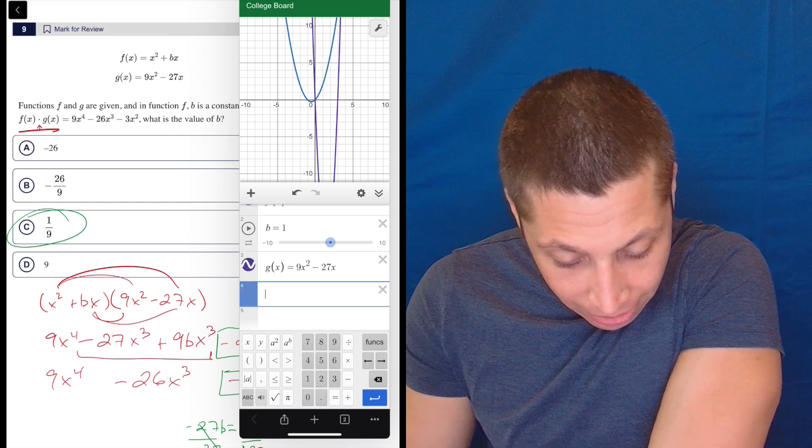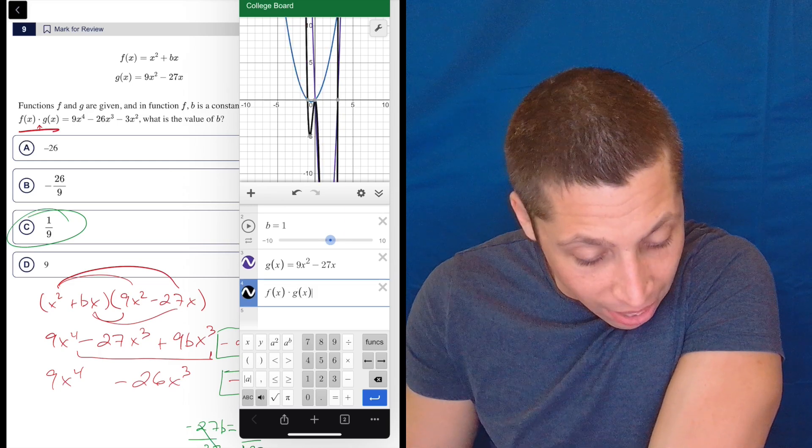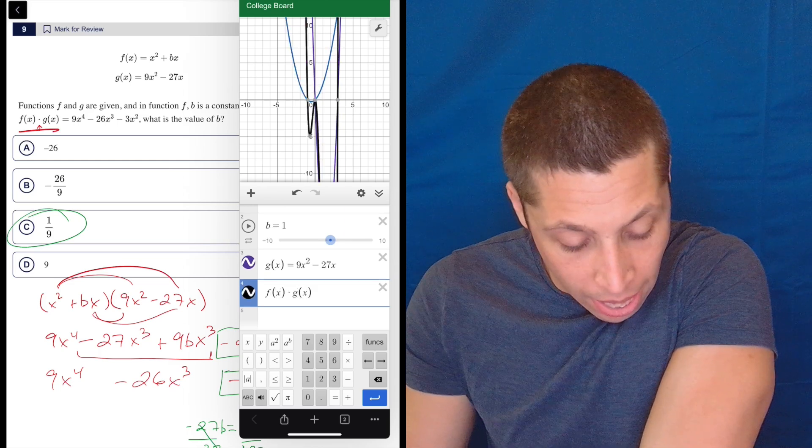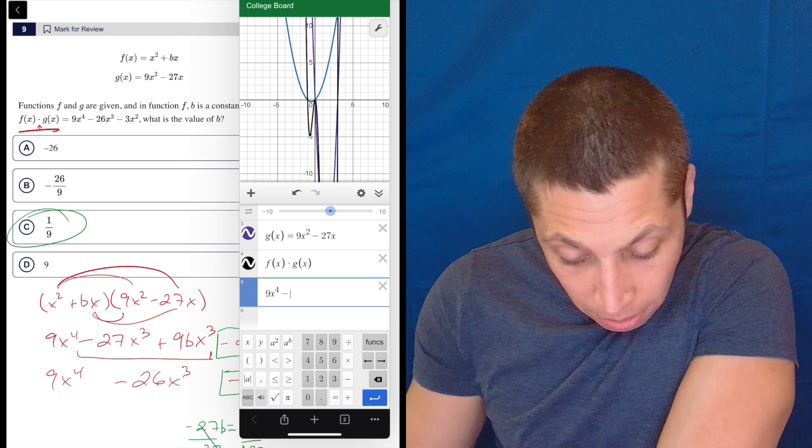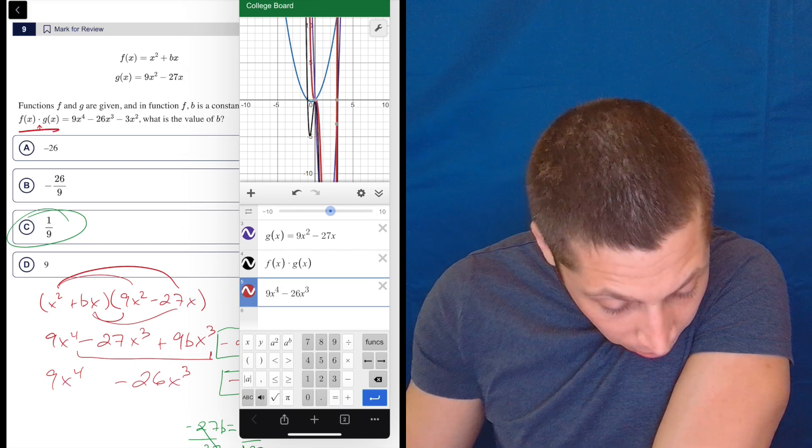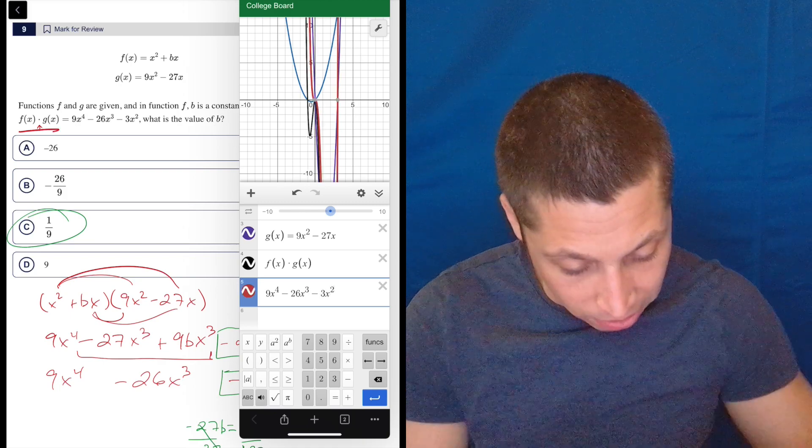And then g(x) is equal to 9x^2 minus 27x. But I don't care about f(x) or g(x). I care about f(x) times g(x). And see, it puts the dot in when I do the times. And I want that to be equal to 9x^4 minus 26x^3 minus 3x^2. Okay.